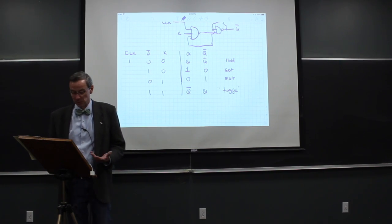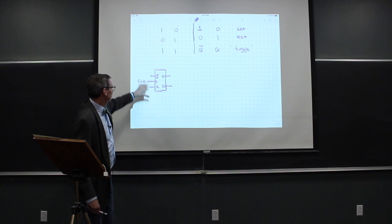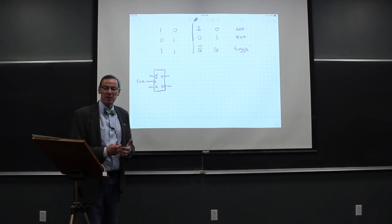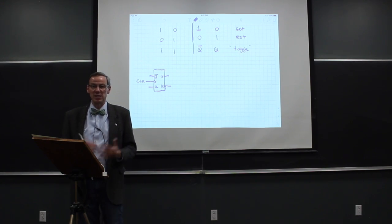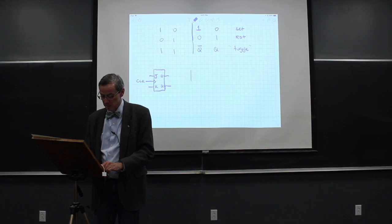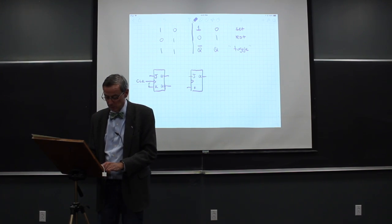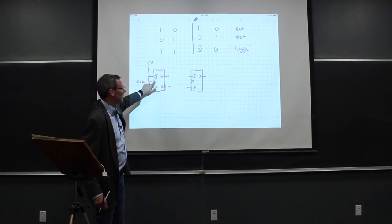We're going to use that toggle mode to develop a counting circuit. The symbol for a JK flip-flop has J and K inputs, a clock input, and Q and Q-bar outputs. The cute thing we can do is chain a couple of these together. We take J and K and strap them to 5 volts so they're both locked to 1, then we just have the clock pulse come in — that's the toggle mode.